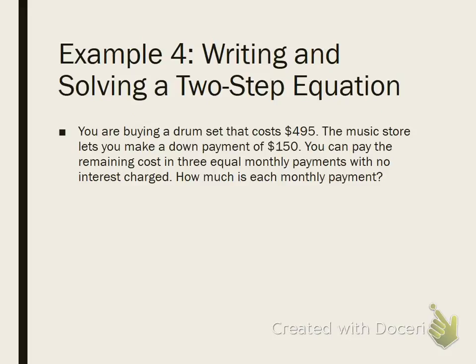One more example. I'm going to read you this problem. While I am reading it, I want you to try to mentally put together this equation. Here's my hints. An equation always has an equal sign. Write it on your paper. Step 1 is an equal sign. It also has a total. So, when I'm reading this, if you think you know the total, put that on one side of the equation. The other side of the equation will be your variable. There will be a number that is not affected by the variable that stands alone, and then a number that needs to be attached to the variable. So here we go. You're buying a drum set that costs $495. The music store lets you make a down payment of $150. You can pay the remaining costs in three equal monthly payments with no interest charge. How much is each monthly payment?